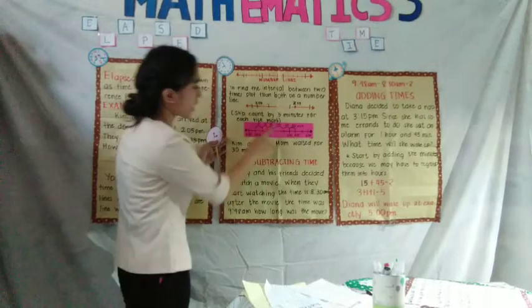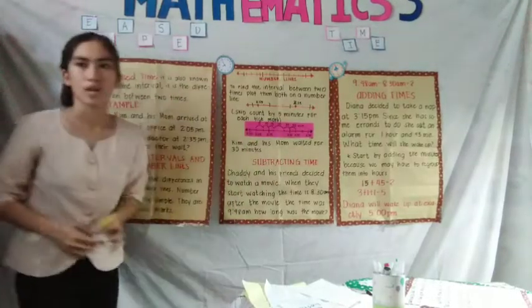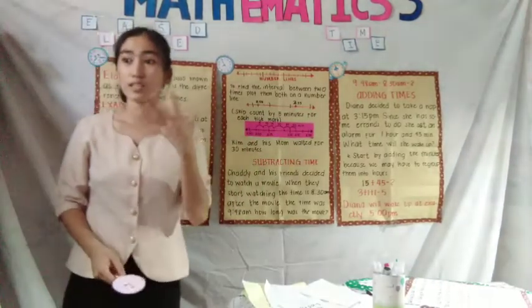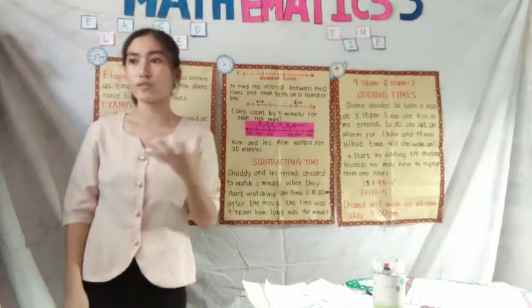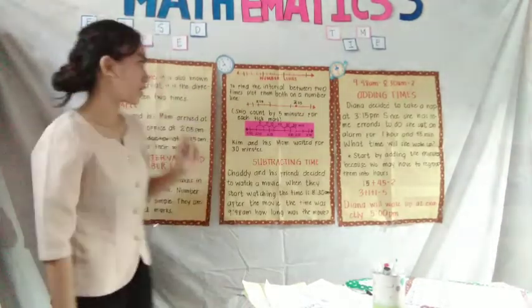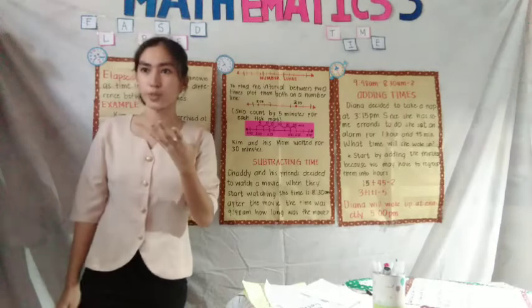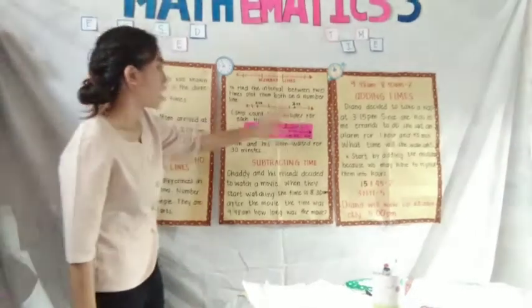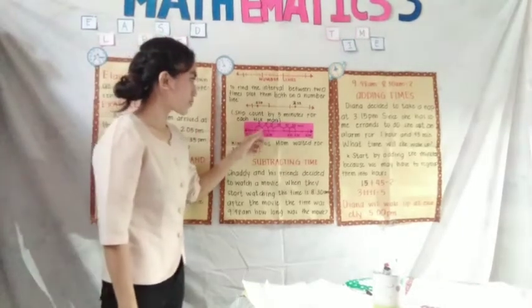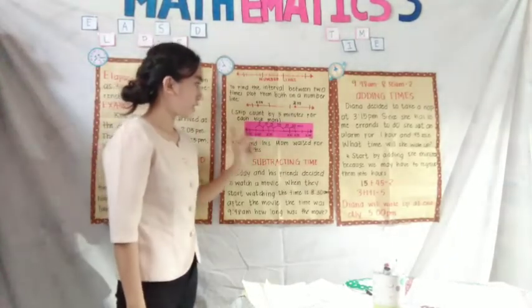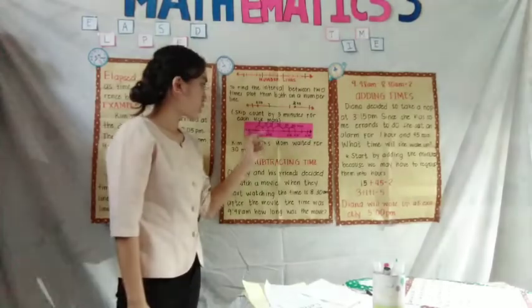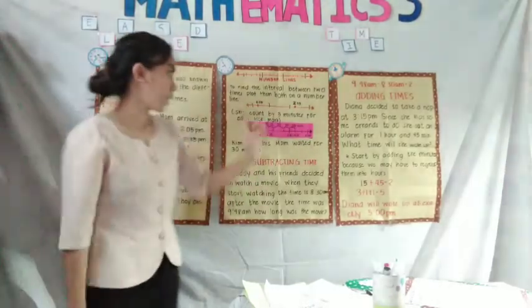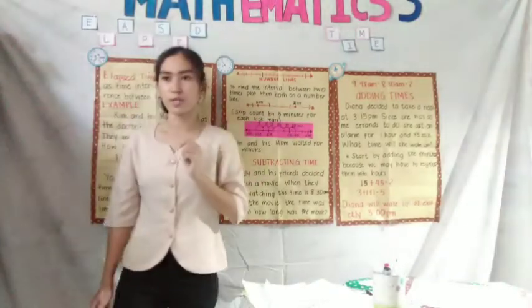We have to skip count by 5 minutes. So from 2:05 to 2:35, we got 1, 2, 3, 4, 5, 6 tick marks. So Mom, does that mean that they just waited for 6 minutes? No, because as I said earlier, we use 5-minute tick marks. So 5-minute tick mark times the 6 tick marks that you get from counting from 2:05 to 2:35, 6 times 5 is equals to 30, right? So Kim and his mom waited for 30 minutes for the doctor.